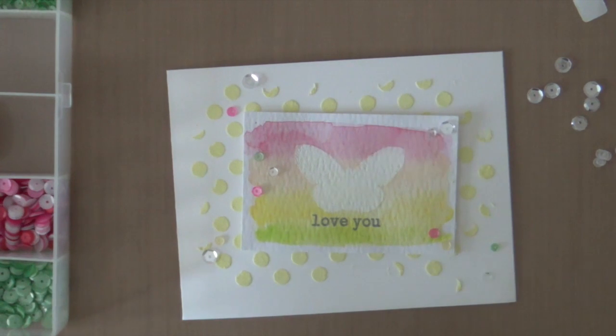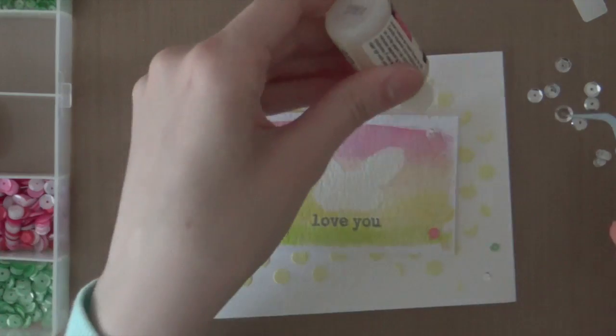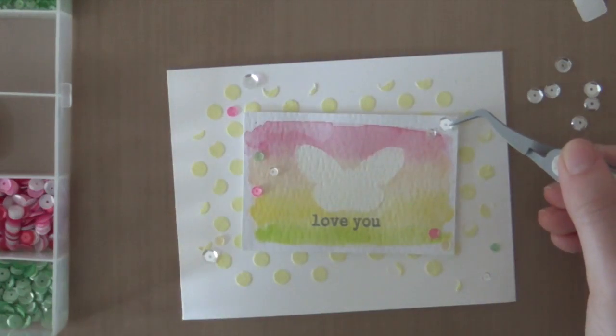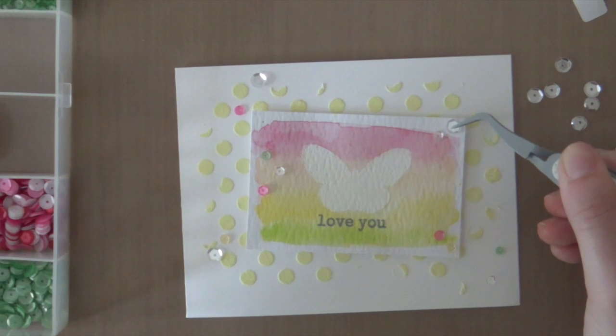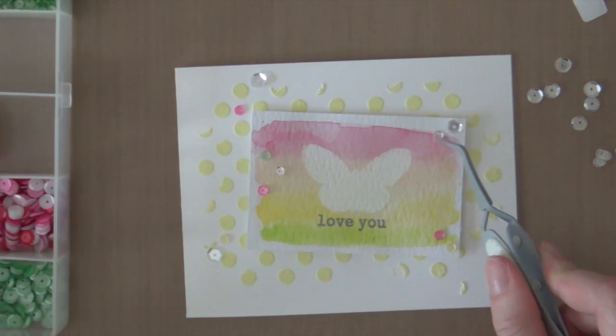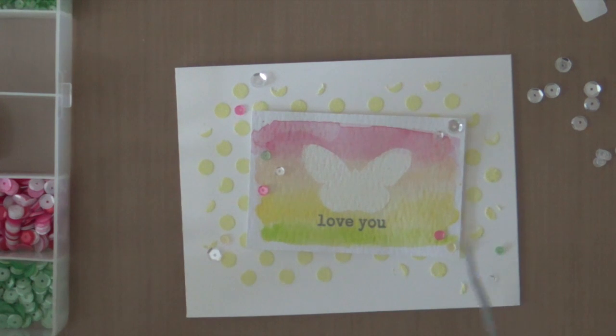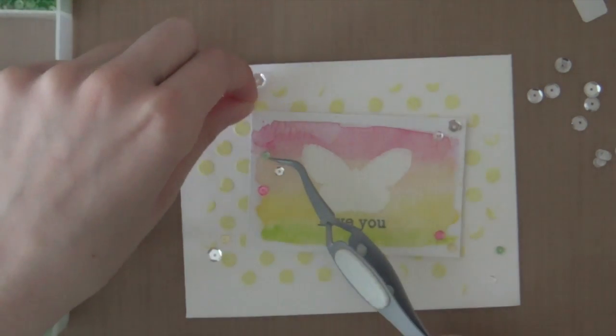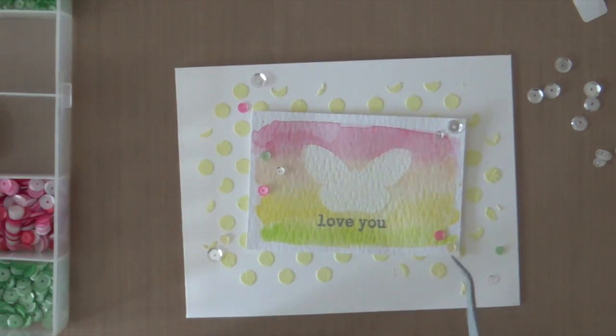So I just positioned some sequins on the card. And I'm going to start adhering them. And I used the Sparkling Clear sequins by Pretty Pink Posh. So these are the 6mm ones. And then over here are the mini ones. Then I also used the mini orchid sequins, the mini fresh mint sequins, and also the mini lemon meringue sequins.